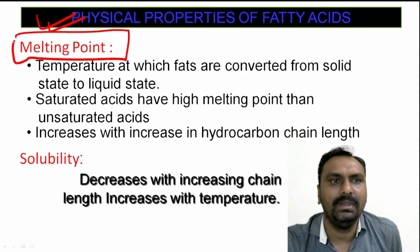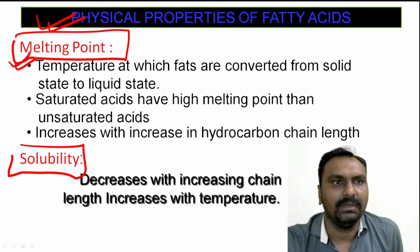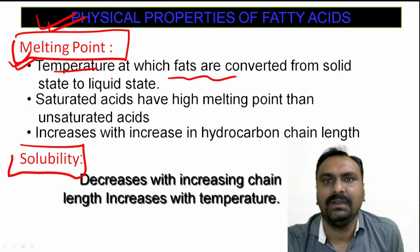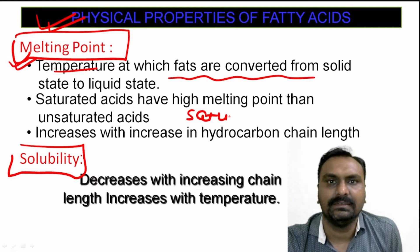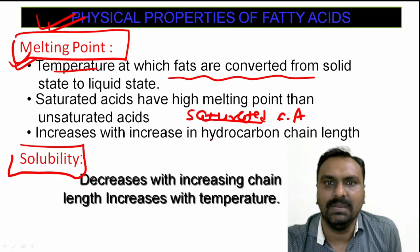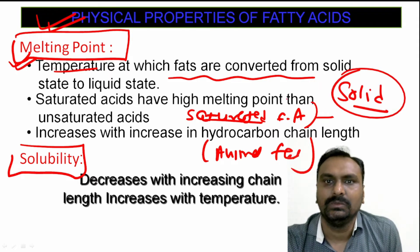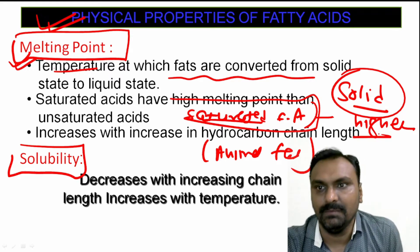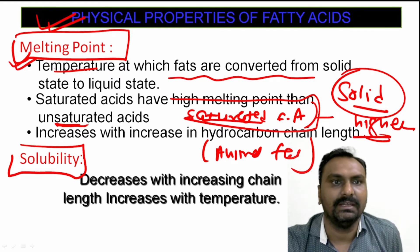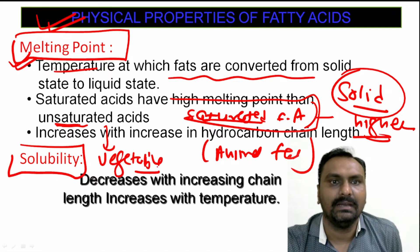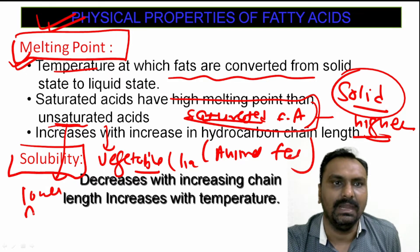The physical properties include melting point and solubility. Melting point is the temperature at which fats are converted from solid state to liquid state. Saturated fatty acids, which are mainly present in animal fat, are solid in nature and have a higher melting point. While unsaturated fatty acids, which are mainly present in vegetable oils, are liquid in nature and have a lower melting point.